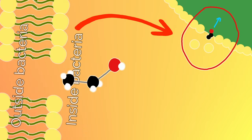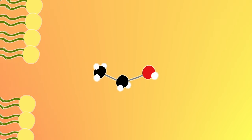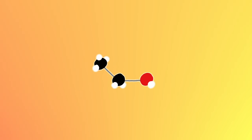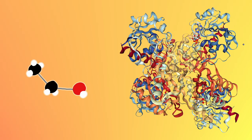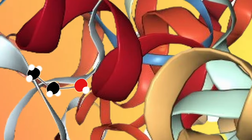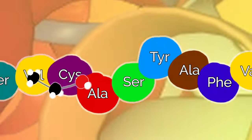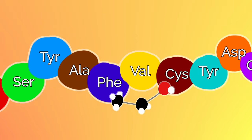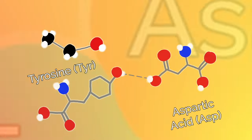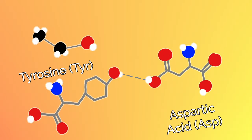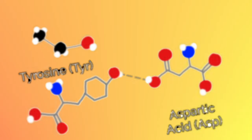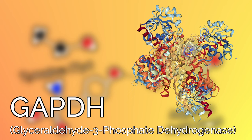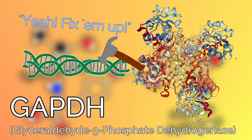Now that ethanol has entered through the membrane, its next destination is the protein. Ethanol would dive deep into the secondary structure — the bent arrangement of amino acids within the chain, right here. This bond is part of the active site of an enzyme called GAPDH, which is essential for DNA repairs of bacteria.